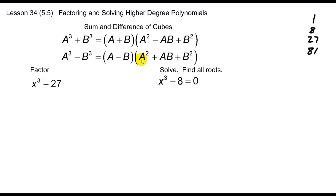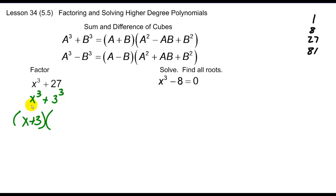In this case, I have a base number of x being cubed, and that's added to a base number of 3 cubed, because 3 cubed is 27. So I use the sum formula: take the sum of the two base numbers, so that's x plus 3, and multiply that by the first number squared — so that's x squared — minus the product of the two, so that's 3x, plus the second base number squared. And that's all we've got.